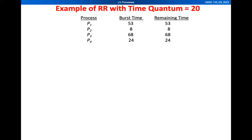The burst time for P1, P2, P3, and P4 is 53, 8, 68, and 24 respectively. Since we have not started executing these processes yet, the remaining time is the same as the burst time.